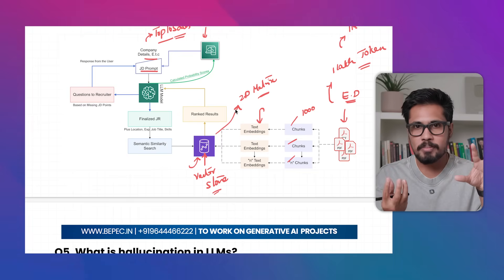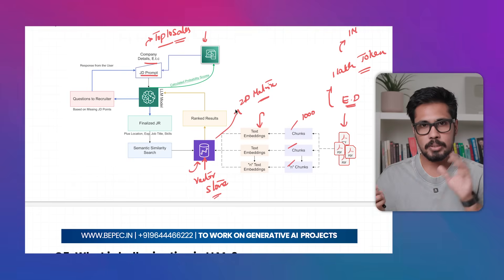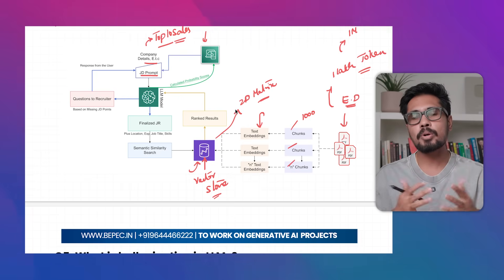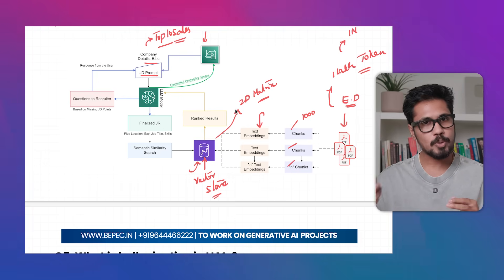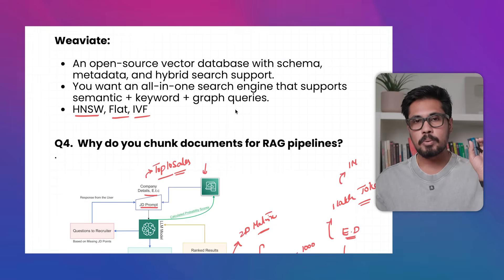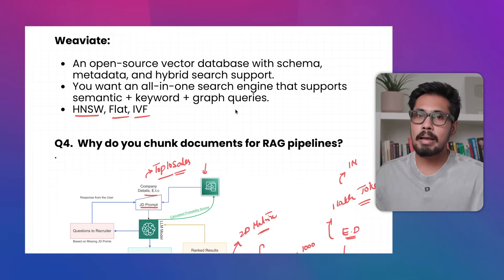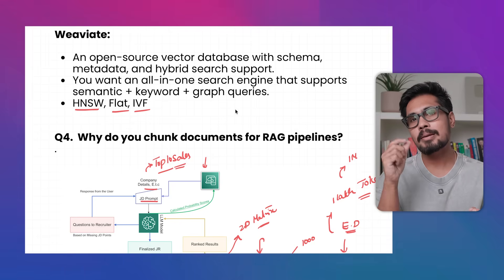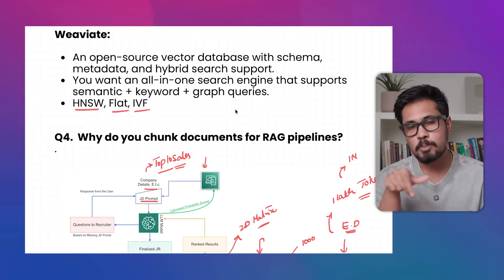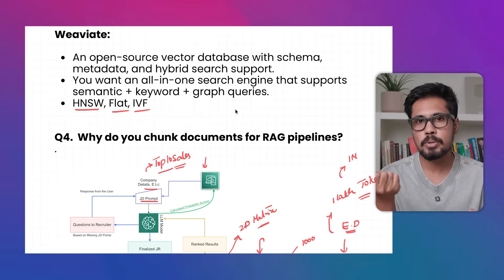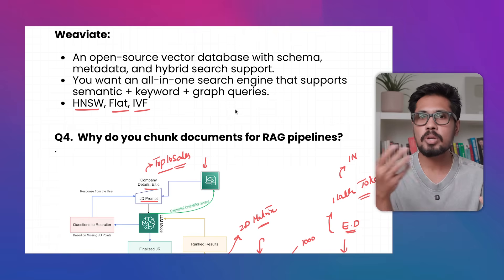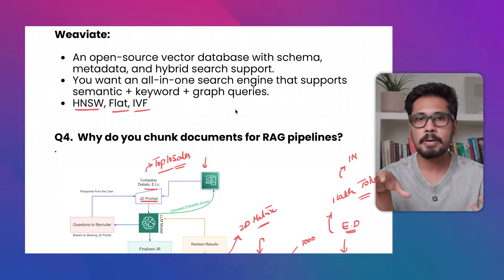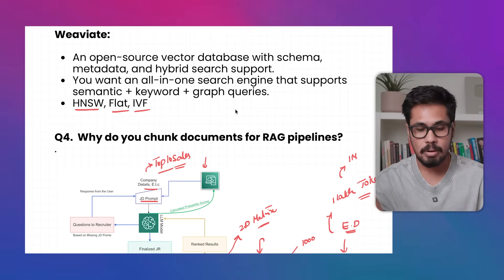The vector store pulls similar chunks to the LLM model, which uses them as context to give a valid response. For accuracy in your RAG architecture, chunk size, chunk overlap, caching, and the kind of vector store you select all play a crucial role. If you select the wrong vector store, even if you tune chunk size and overlap, your search accuracy may not be good — it will be inaccurate.